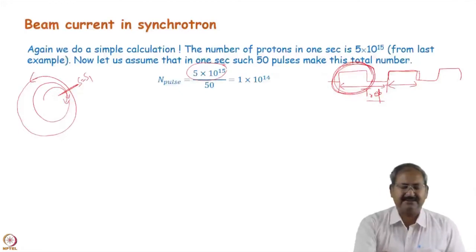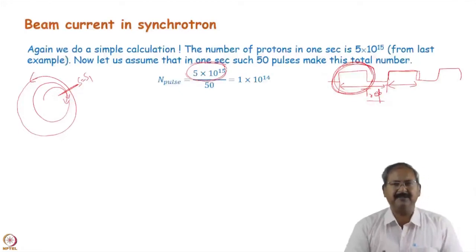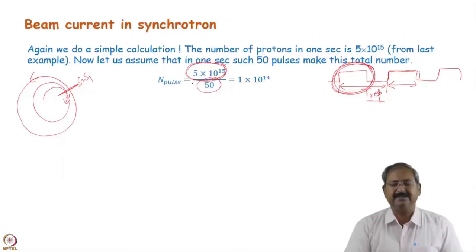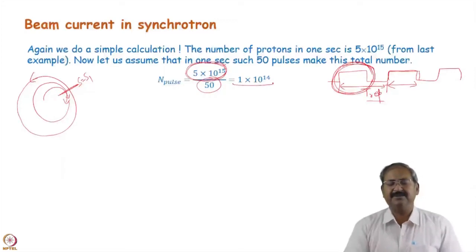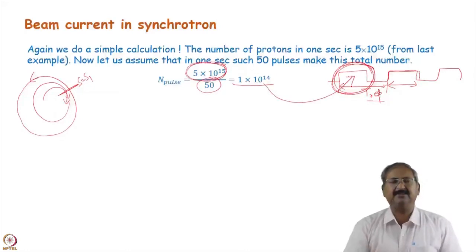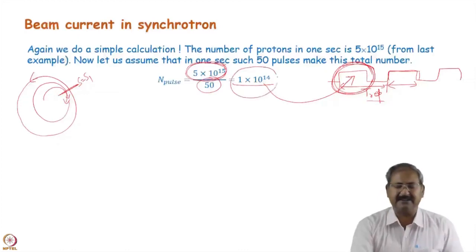5×10^15 was the number of protons in one second. So in one pulse this will be 5×10^15 divided by 50, which equals 1×10^14. So in a single pulse, that many protons are present, and in the synchrotron at any given time, this is the number of protons present.